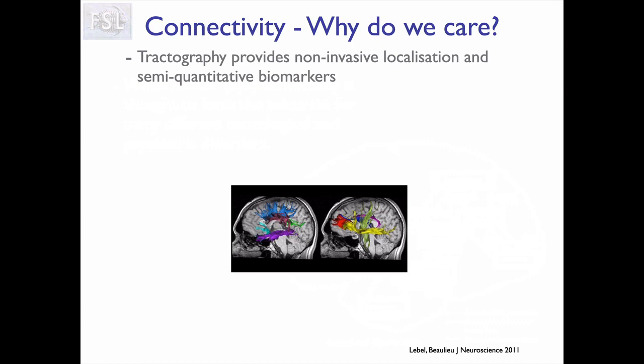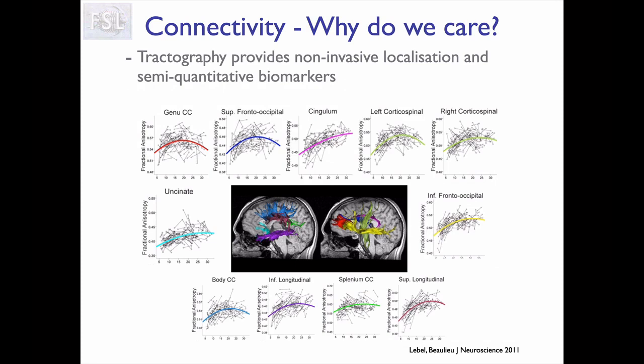So one goal of tractography is to produce maps of these major white matter bundles — you can think of this as a way to segment the white matter into its major bundles. Once we have such a segmentation, you can, for example, study how the FA in each of these bundles changes as a function of age, as done in this study.